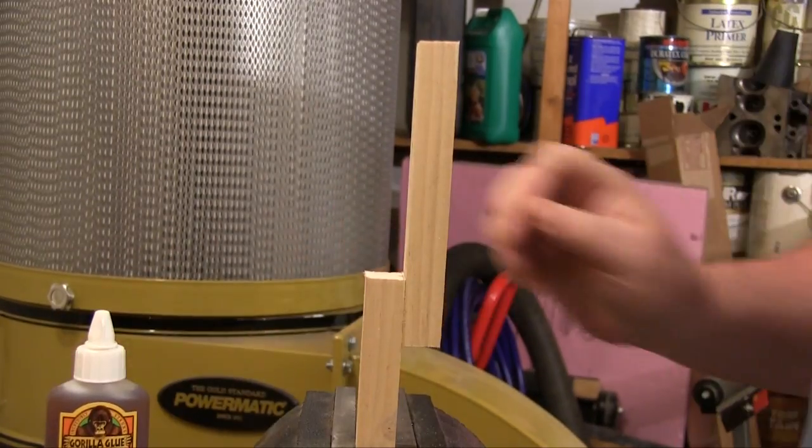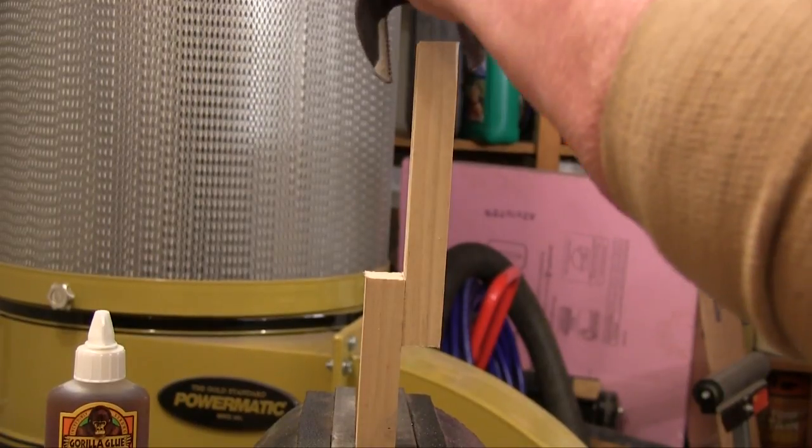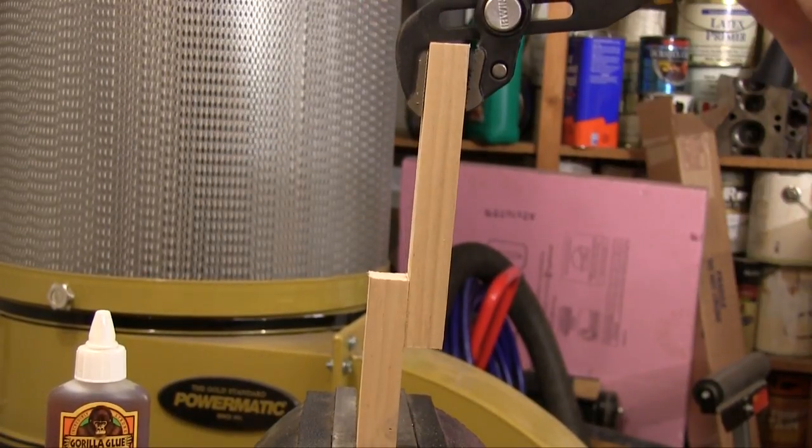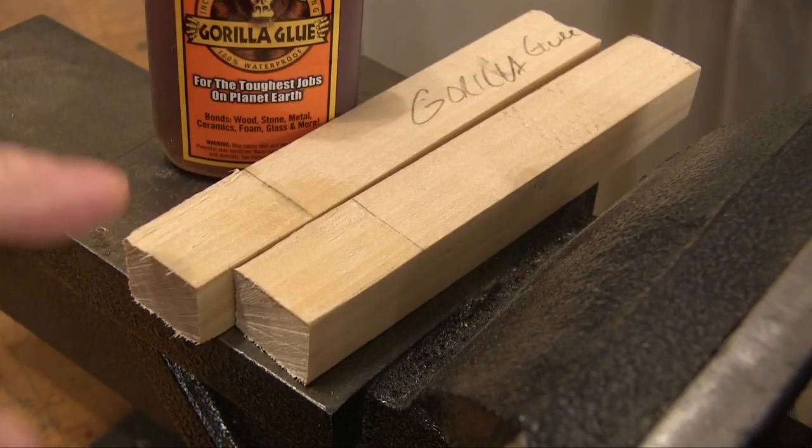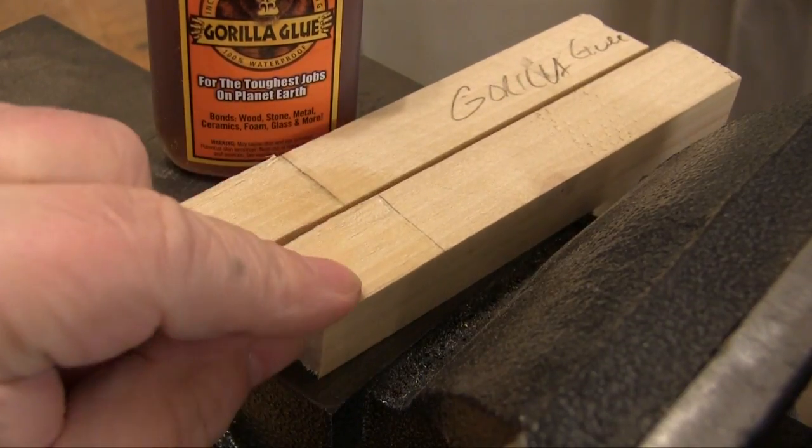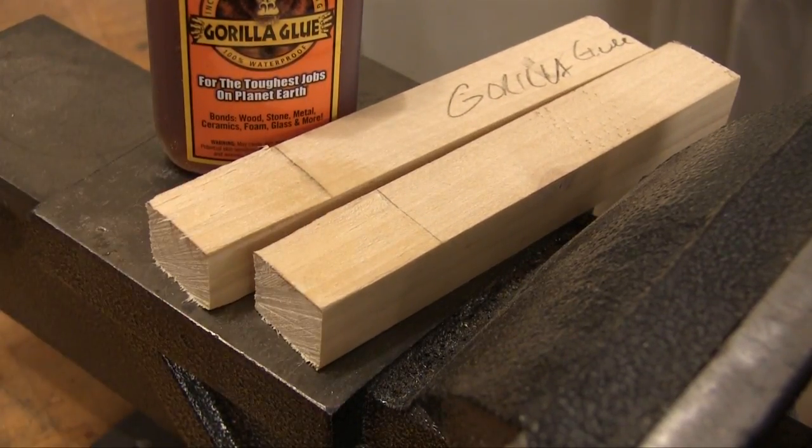Next is the joint made with the Gorilla polyurethane glue. Watch how far these short pieces of wood deflect before the joint breaks. Here again, we have wood on both sides of the joint. Here also, the wood failed, not the glue.